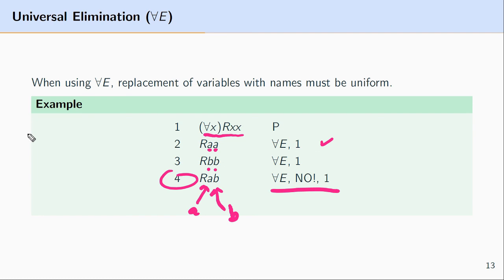Line 4 is the problematic line. If line 1 says "everyone loves themselves," then line 4 would say it follows from line 1 that Alfred loves Bob. But that doesn't follow intuitively from "everyone loves themselves." So to summarize: when you replace the bound variables with names, you want to make sure that the replacement with a name is uniform.